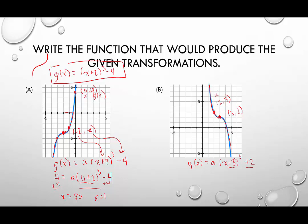And we're going to use that to figure out the value of a. So I'm going to plug in 2 for x and 3 for g of x. That will give me 3 equals a times 2 minus 3 cubed plus 2. I'm going to subtract 2 from both sides, and that'll give me 1 equals negative 1 cubed, which is negative a. So a equals negative 1.